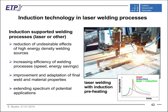A combination of induction technologies with other technologies is sometimes preferable — for example, induction technology with laser welding processes. Laser welding is very modern and gives many advantages due to very concentrated energy and high welding speed, but sometimes the high energy density leads to undesirable changes in material properties. It can therefore be very useful to combine laser technology with induction technology to increase welding speed or to improve the final material properties. For welding of very thick material, a first induction coil heats the material and the laser does the final welding.